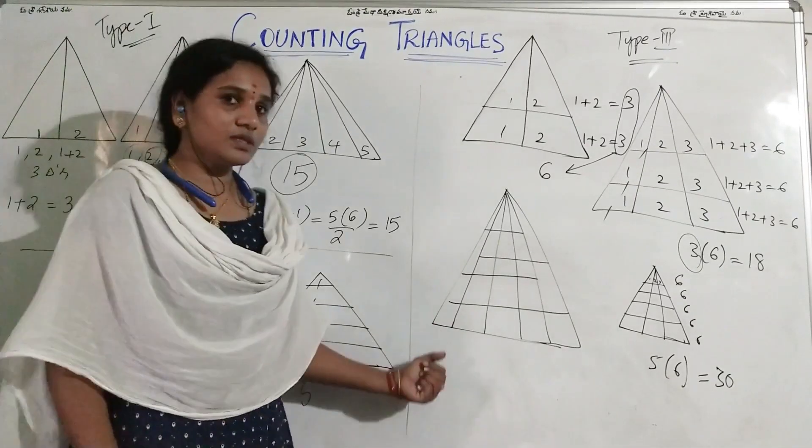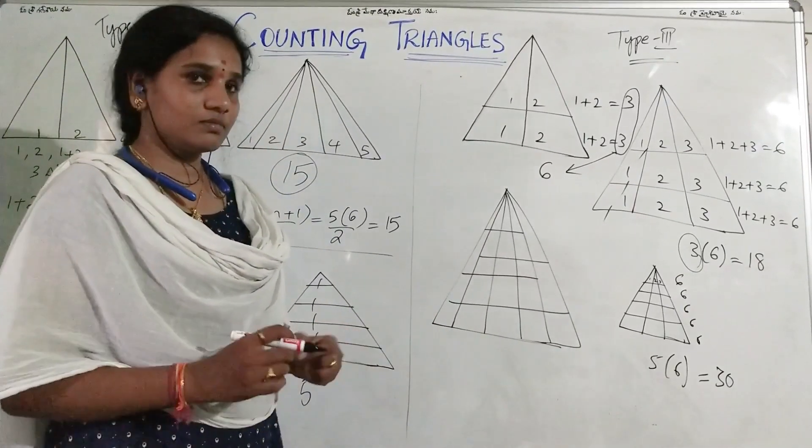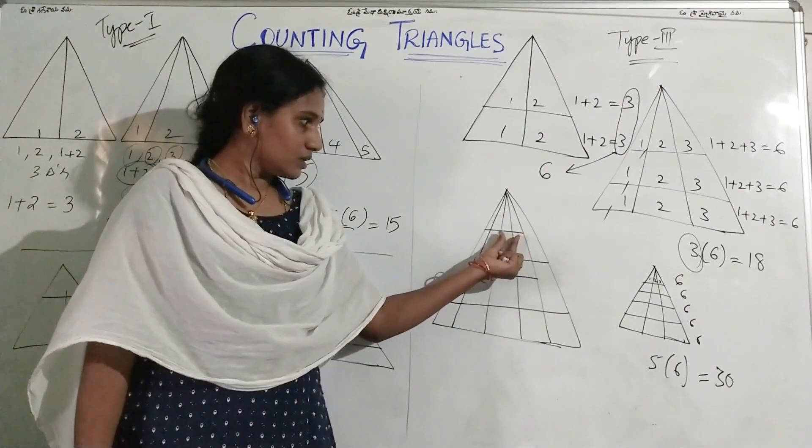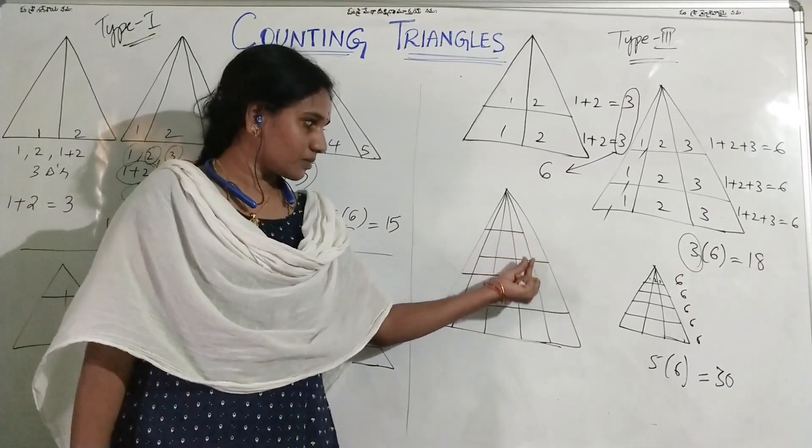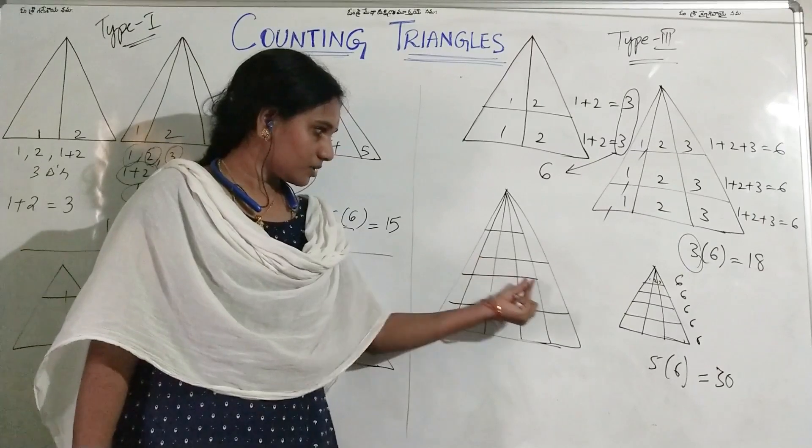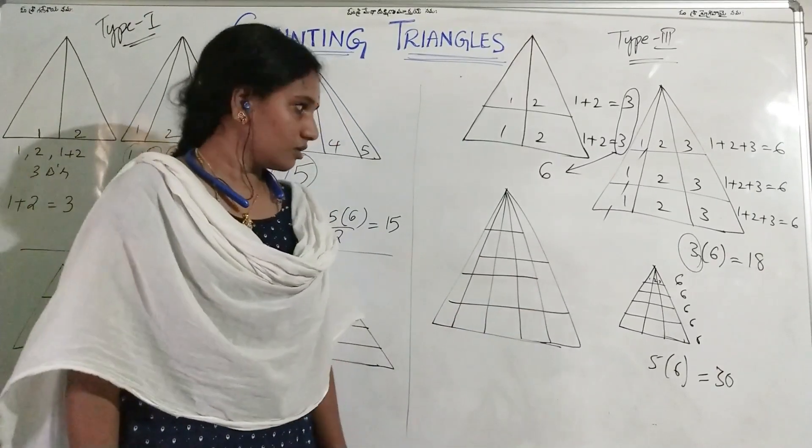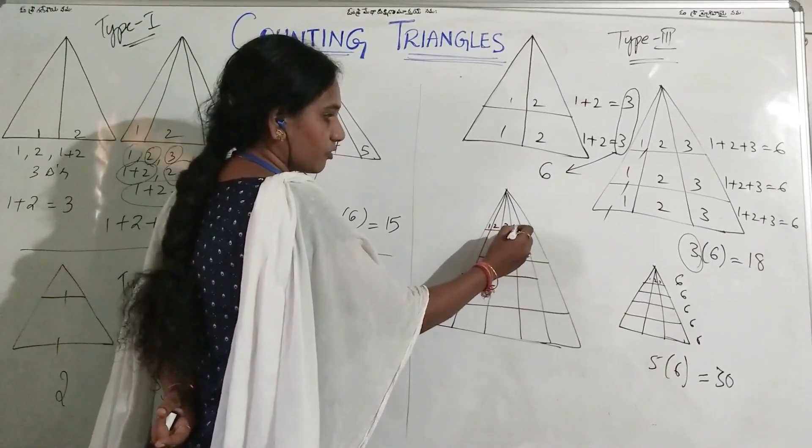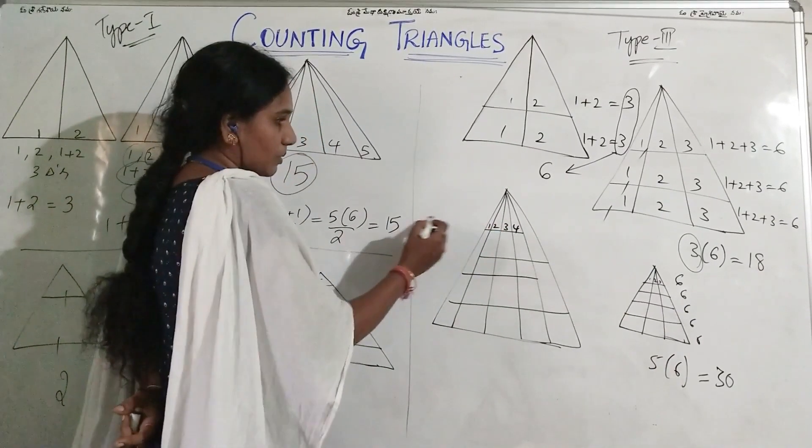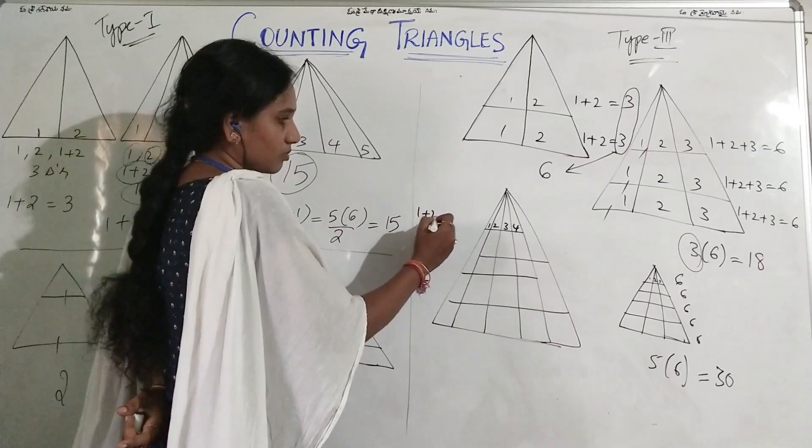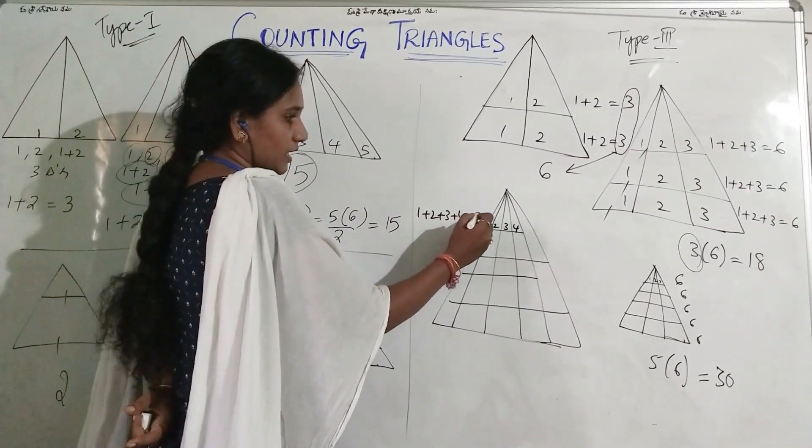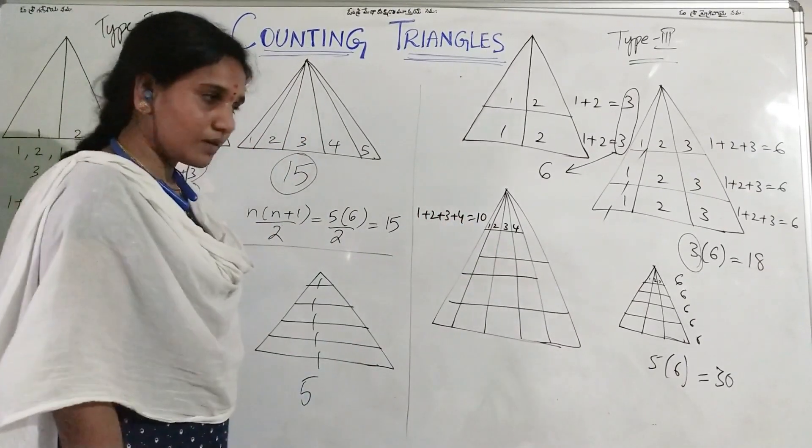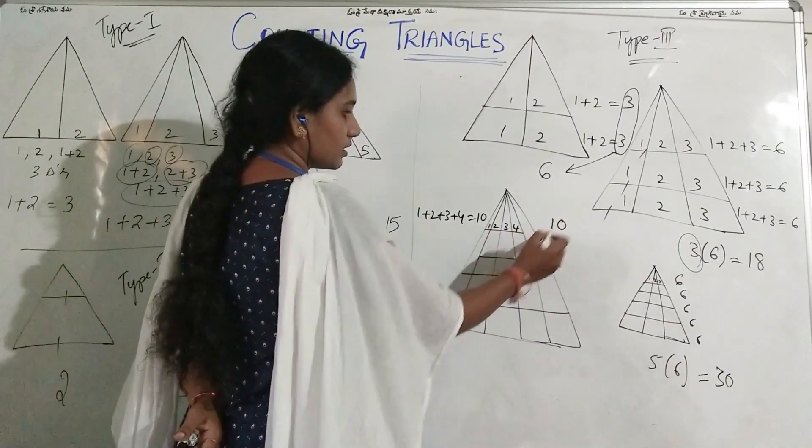Now observe this figure. This is a little bit critical. Here, this line segment is stopped here. Here it is stopped here. Here it is stopped here. Now give the numbering 1, 2, 3, 4. So this is 1 plus 2 plus 3 plus 4, which is 10. So I am writing the count 10 here.